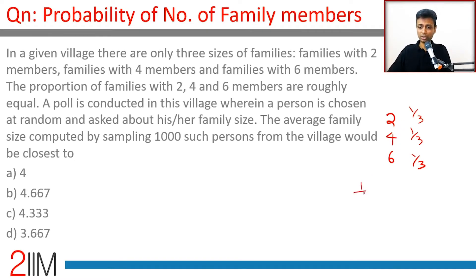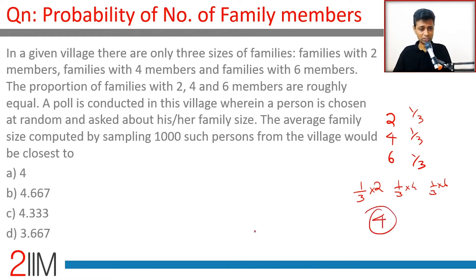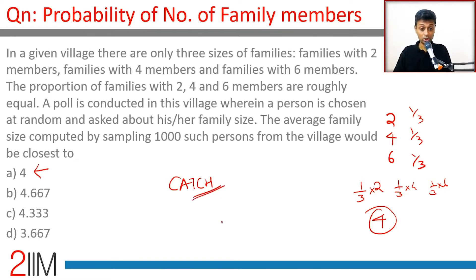One might think: one third saying two, one third saying four, one third saying six — so one third of two plus four plus six, which is one third of twelve, which is four. That seems like the straightforward answer. But this can't be such an easy question — there is a catch somewhere. So four is not the right answer. What could be the right answer?